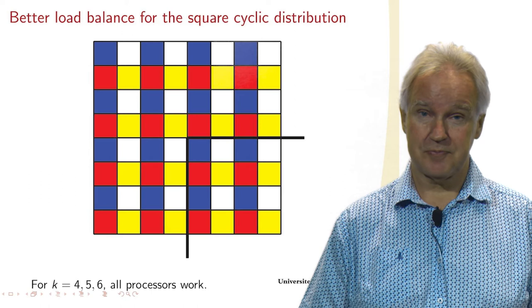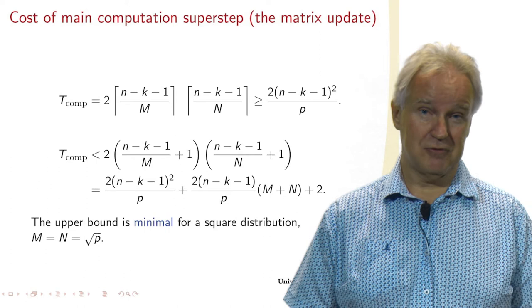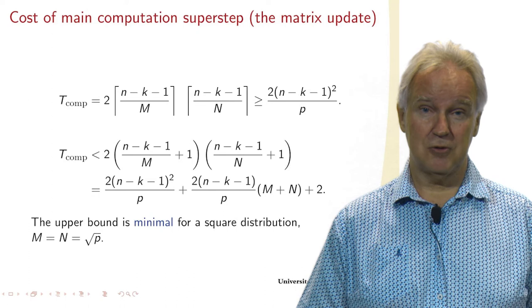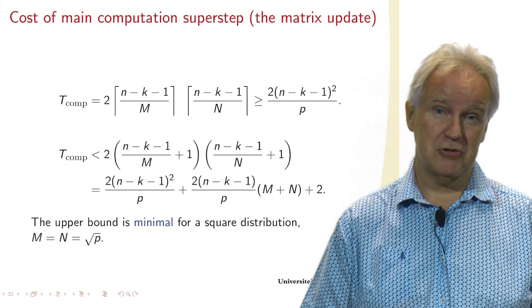We can analyze the cost then, and the cost of the computation superstep, which does the update, then is equal to two times the number of flops that we get, the number of rows at most. This is R_{K+1} times C_{K+1}.